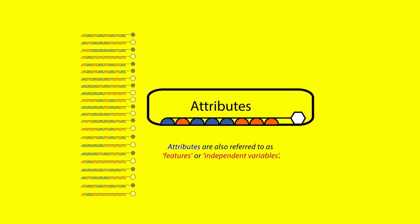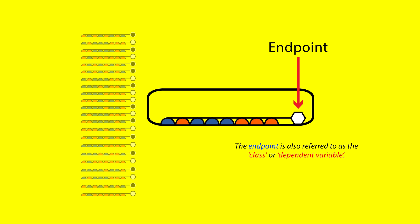Let's illustrate individual instances like this. Each instance has eight attributes that can have the value 0 or 1, illustrated here by the colors orange or blue. The term endpoint refers to the variable in the data that we're trying to predict. In this example, the endpoint is one of two classes illustrated by a black or white hexagon.